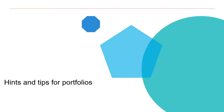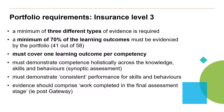Hints and Tips for Portfolios. Virtually all EPAs so far have been at Level 3, so we're going to focus on the Level 3 standard. Highlighted in the slide are the key requirements stated in the assessment plan: three different types of evidence are required as a minimum; a minimum of 70% of the learning outcomes must be evidenced by the portfolio; and it must cover one learning outcome per competency. Mostly these have been met by submissions to date, which is positive. Occasionally bullet point 3 is being missed, and often bullet point 4 is weak.